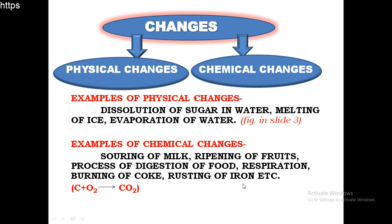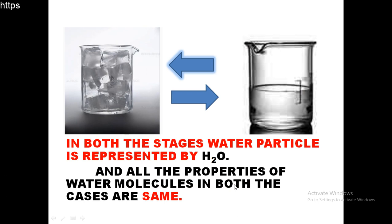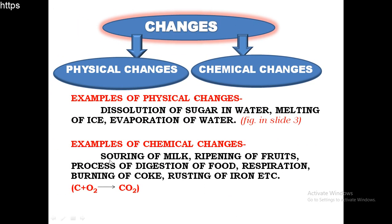Consider rusting of iron. Here I have shown some iron articles, and you can observe that a brown-colored layer is formed on the iron nails - these are layers of oxide of iron. When we expose an iron article for a long time to moist air, a layer of oxide is formed. This is a chemical process because this oxide layer is a new substance formed on the surface of the iron article. These types of changes are called chemical changes.